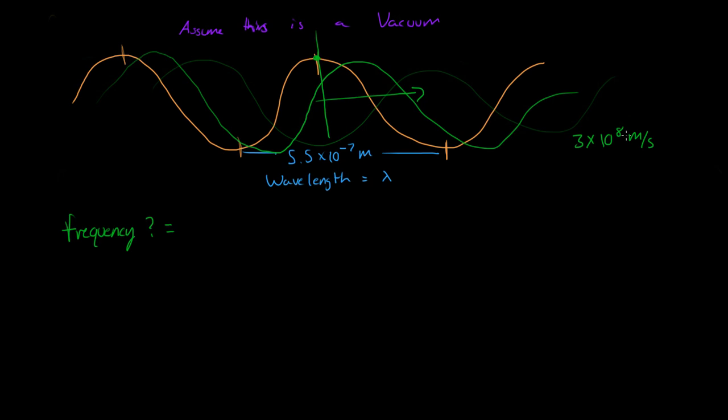So if we know the speed, how fast this light is moving through, and we know the wavelength, how wide each wave is, then we can find out how many of these tops are moving through. Because for every 5.5 times 10 to the negative 7 meters, we have one wavelength passing through this area. When we take the speed of the light and divide it by its wavelength...